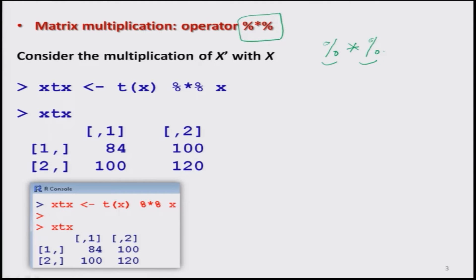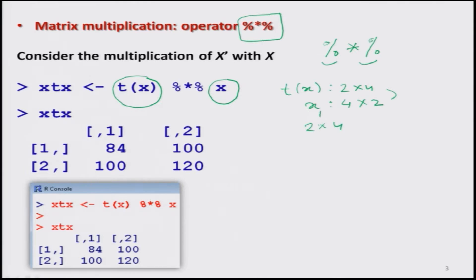Let us try to do some elementary operations to show how things work. We will create two matrices. One matrix X I already have, and in the earlier lecture we had created another matrix which was the transpose of X. The order of the transpose of X is 2 by 4 and the order of X is 4 by 2. When multiplying them together, TX (2×4) times X (4×2), the inner dimensions match, so the product is well defined and the result will be a 2 by 2 matrix.